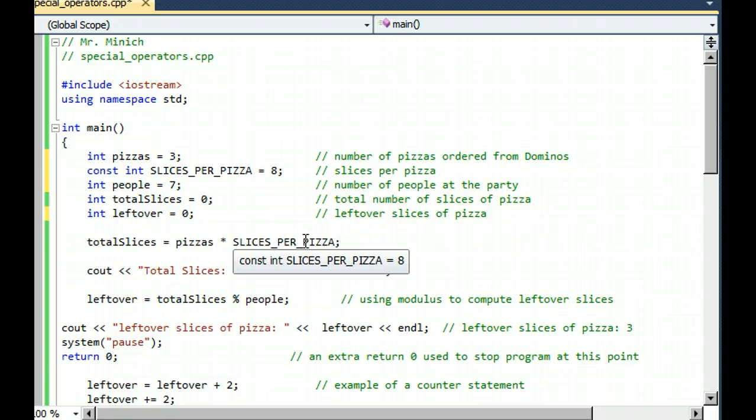So you see in my popup there that constant slices per pizza is currently equal to eight. Well, you could have seen that by looking backwards with your eyeballs, but in a long program that might be really handy so you don't have to scroll up a lot.